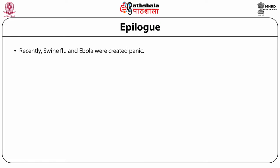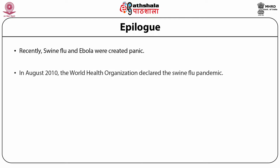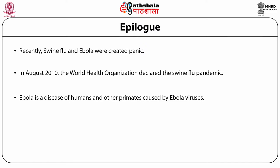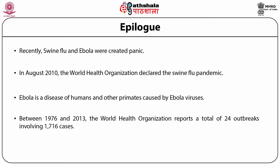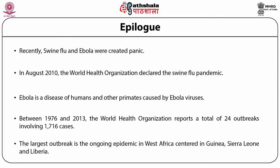Recently, swine flu and Ebola created widespread panic. In August 2010, the World Health Organization declared the swine flu pandemic. Ebola is a disease of humans and other primates caused by Ebola viruses. Between 1976 and 2013, the World Health Organization reports a total of 24 outbreaks involving 1,716 cases. The largest outbreak is the ongoing epidemic in West Africa centered in Guinea, Sierra Leone and Liberia.